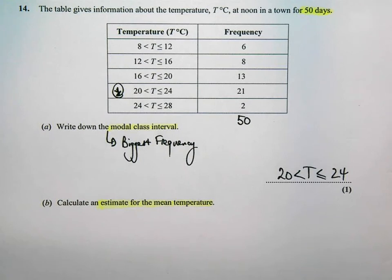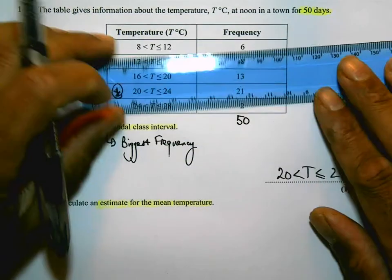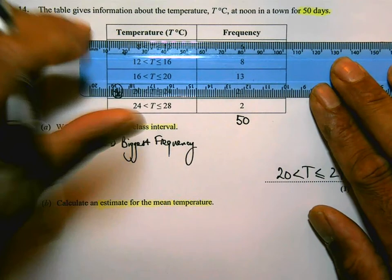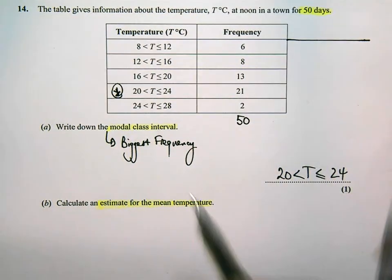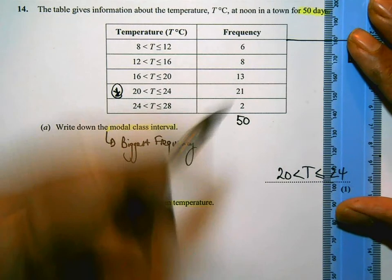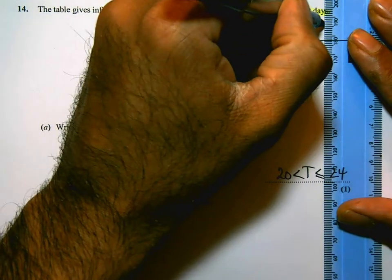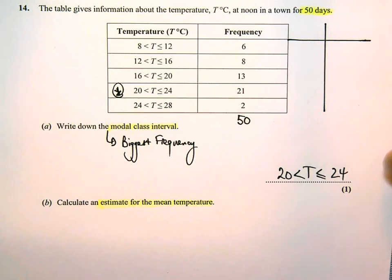I need to then add two more columns to this. And the columns that I'm going to add on are midpoint and midpoint times frequency.